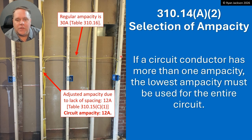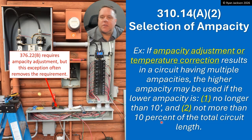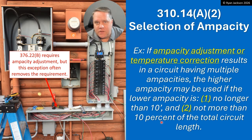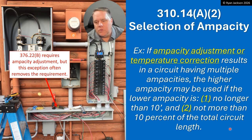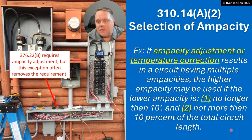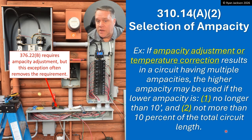The rule says you have to use the lower ampacity for the entire circuit — this entire circuit is now only a 12-amp wire. That makes sense. But there's long been an exception that a lot of people aren't aware of, and it's one you really ought to take advantage of. Without the code change text first: if a circuit has multiple ampacities, the higher ampacity can be used if the lower-ampacity portion is no longer than 10 feet and not more than 10 percent of the total circuit length.